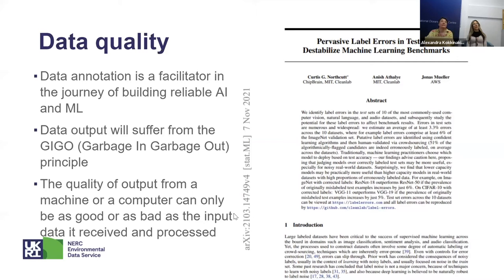Another aspect is the importance of data quality. Data annotation is a facilitator in the journey of building reliable artificial intelligence and machine learning. However, the output is always only as good as the input — data outputs sometimes suffer from the GIGO, garbage in, garbage out, principle. This was illustrated recently by a MIT study which discovered substantial errors in datasets used for machine learning benchmarks, where images were mislabelled. It is important to use trusted datasets that have been validated by humans in order to trust the output of processing.